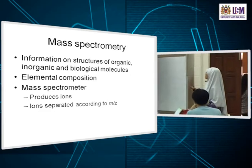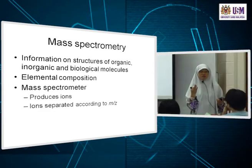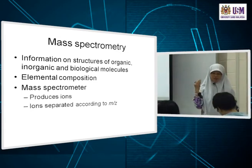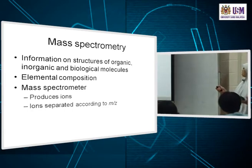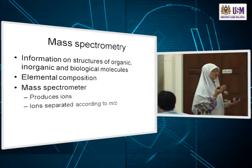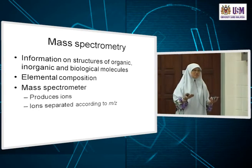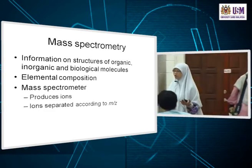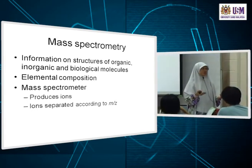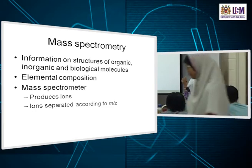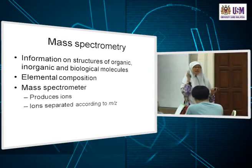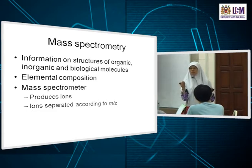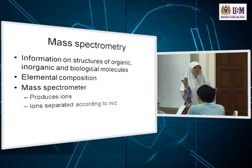Mass spectrometry is still interaction of some energy with matter, but now it no longer involves absorption of electromagnetic radiation or emission. All this while when we were talking about atomic absorption, flame emission, graphite AAS, ICP optical emission, you are looking at light — detecting how much light has been absorbed or emitted, in the UV region and in the visible.